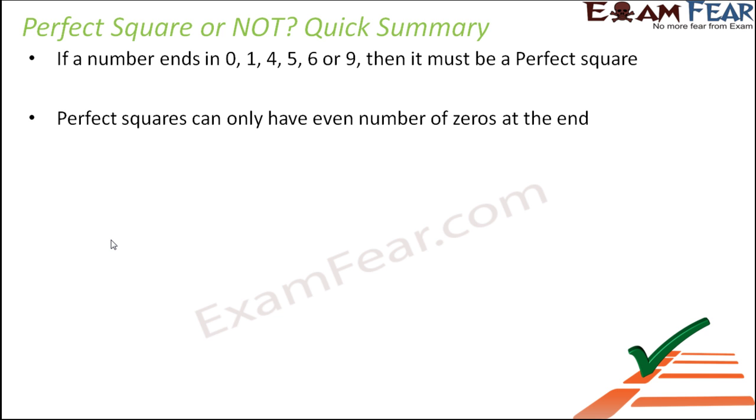Next, perfect squares can only have even number of zeros at the end. If you have numbers ending with zeros, for example 3000, is this a perfect square? No, because it has three zeros, so it is not a perfect square. But if you have something like 2500, is this a perfect square? Yes, because it has even number of zeros.